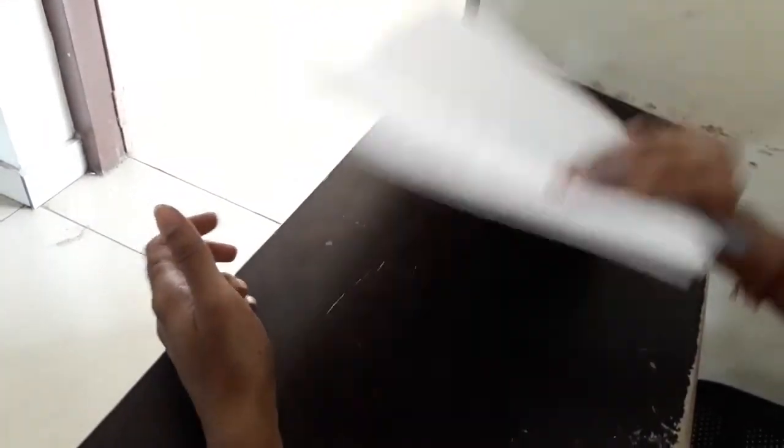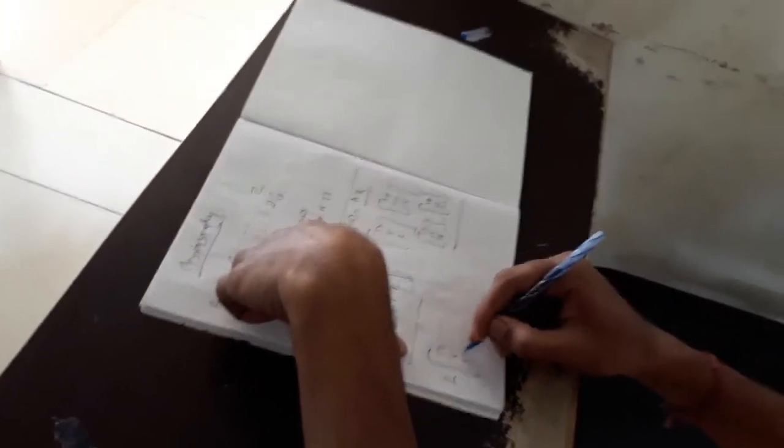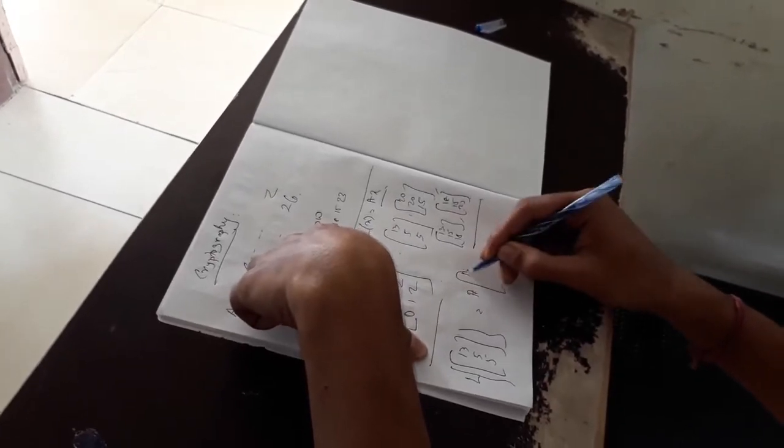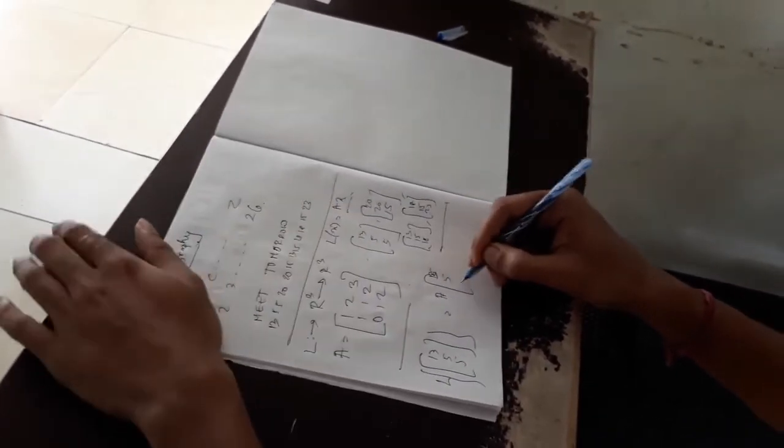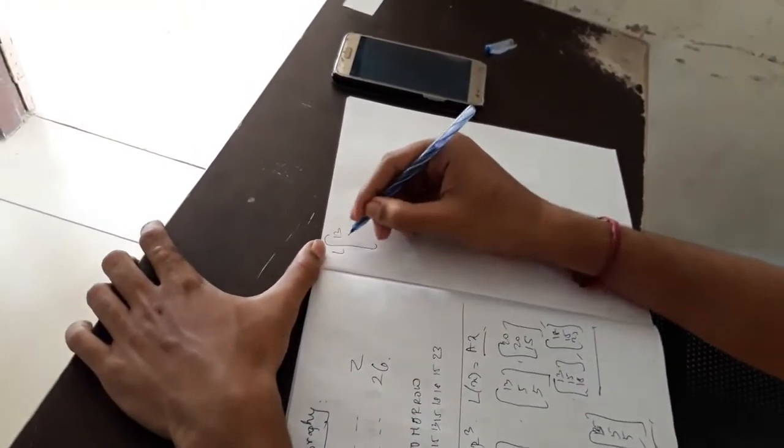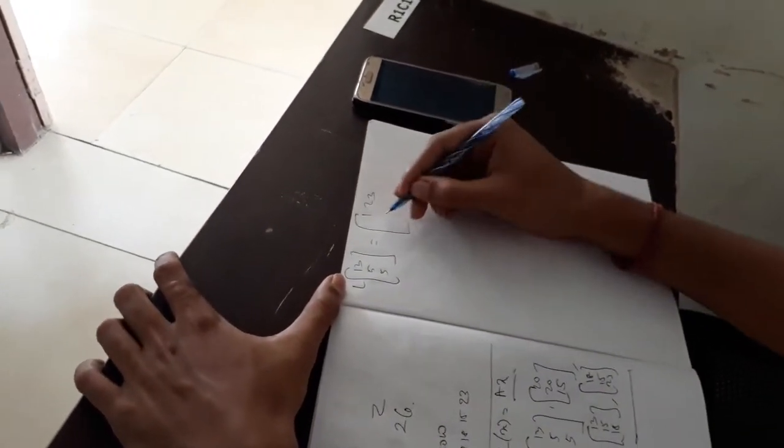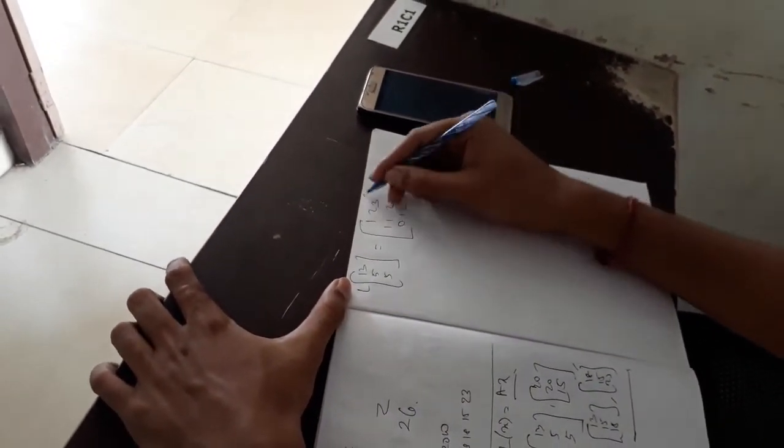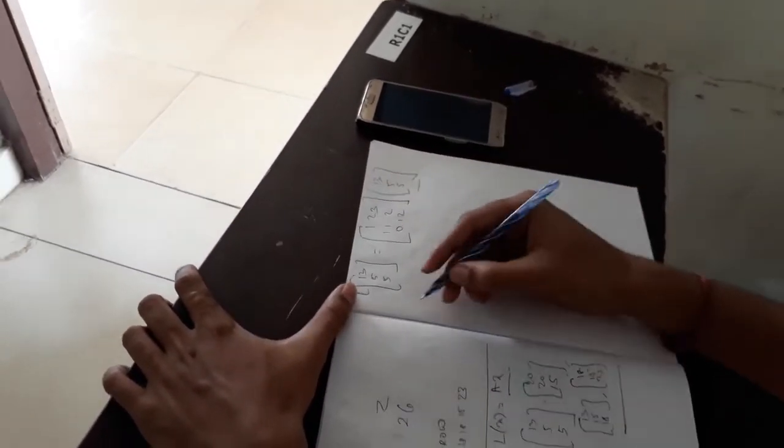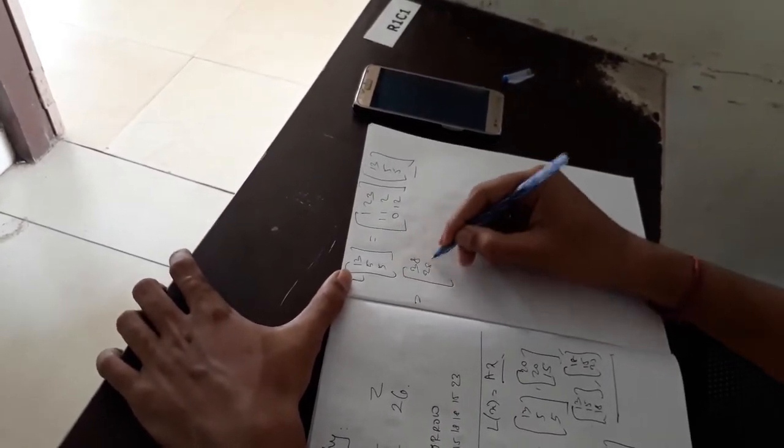Now, suppose we multiply this L of 13, 5, 5. What will it be? A into 13, 5, 5. We know A. So L of 13, 5, 5 equals 1, 2, 3, 1, 1, 2, 0, 1, 2 into 13, 5, 5, and that is equal to 38, 28, 15. If you calculate this you will get this result.